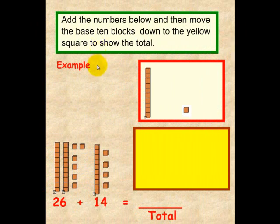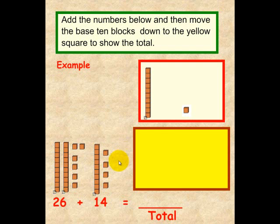Example. In this lesson, we're going to show you how you can add 10's and accumulate or circle the 1's to make the next 10. So, let's look and see how that's done. First of all, you'll notice that we're going to add 26, which is 1, 2 tens, and we have 1, 2, 3, 4, 5, 6 ones.